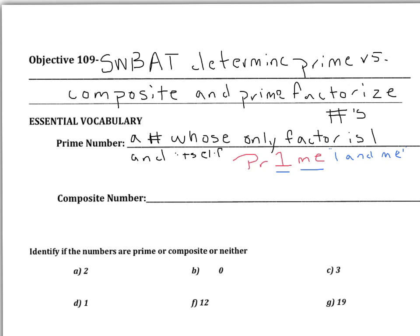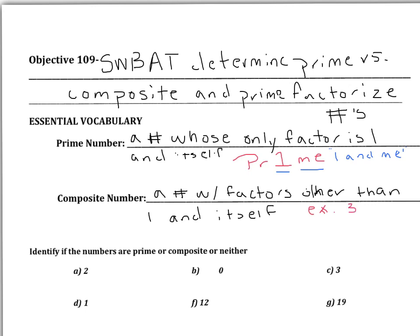A composite number is a number with factors other than 1 and itself. For example, take the number 3. Think of what times what gives you 3 — the only factors are 1 times 3. That makes 3 a prime number; its only factors are 1 and itself.